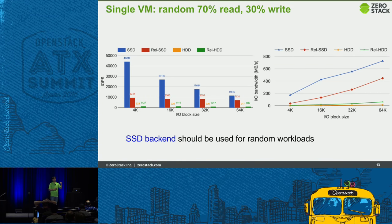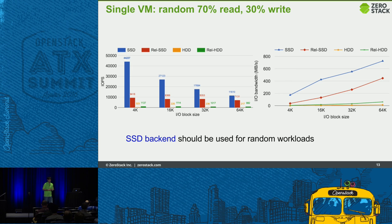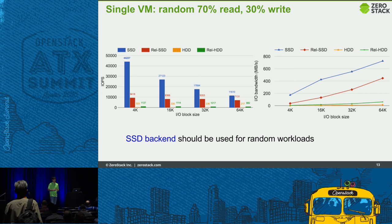The earlier slide showed 100% sequential read, which is not representative of enterprise workloads. A 70% read and 30% write mix is more representative. Looking at those numbers, on HDD you see throughput on the order of hundreds of megabytes per second, but on SSD you get more than 10 times that — around 800 MBPS — for both local SSD and replicated SSD. So SSD backend should be used for random workloads.